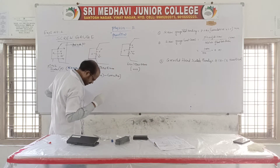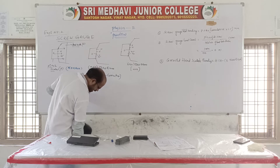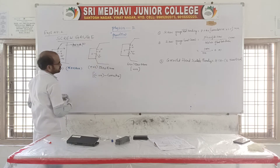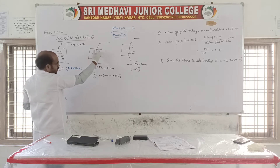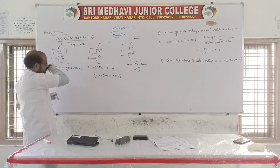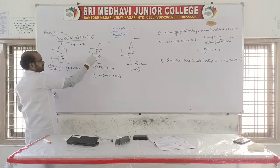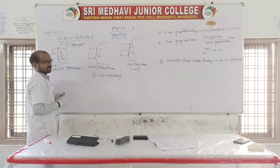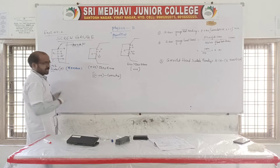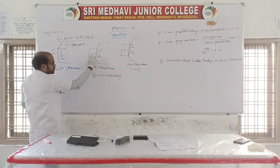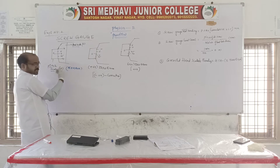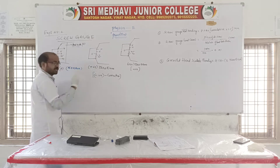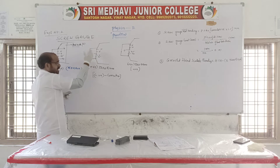If there is some error, look at the pitch scale and head scale. If the head scale zero is below the pitch scale zero, then we say there is a positive zero error. When the error is positive, the correction to be applied is negative — meaning we should subtract that value.